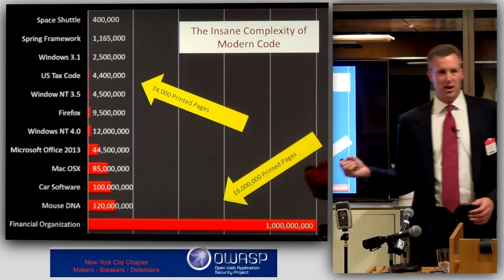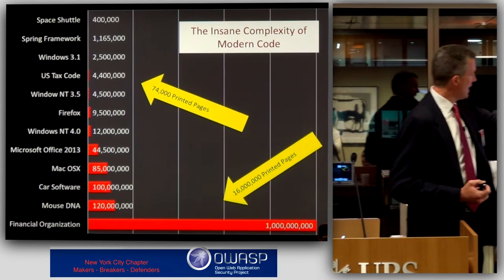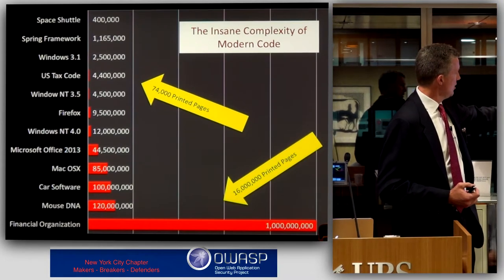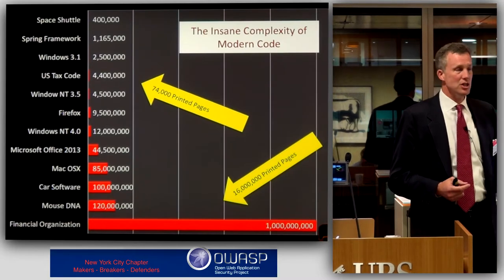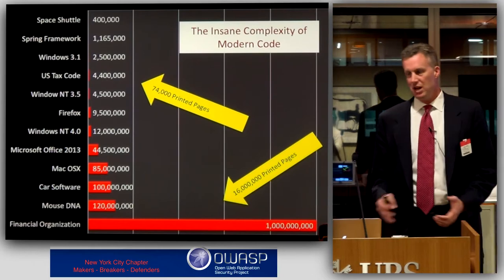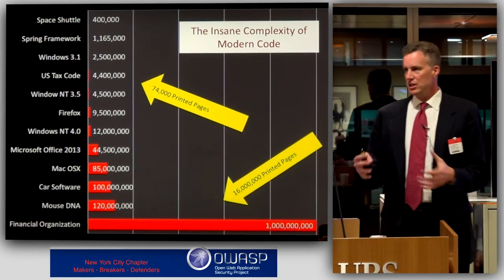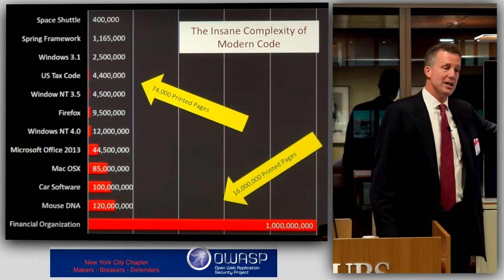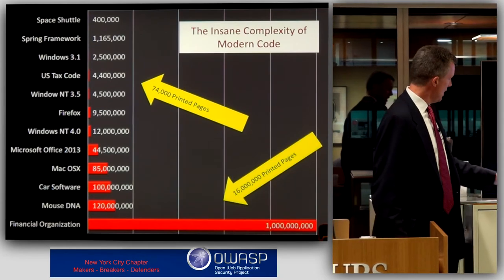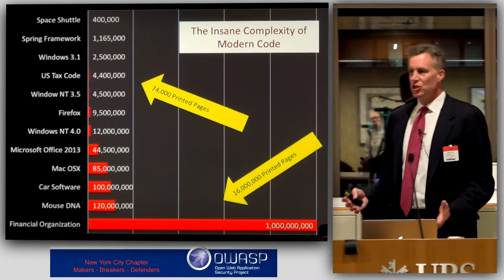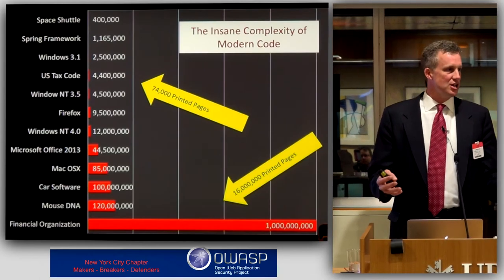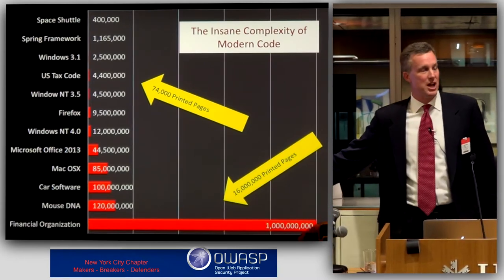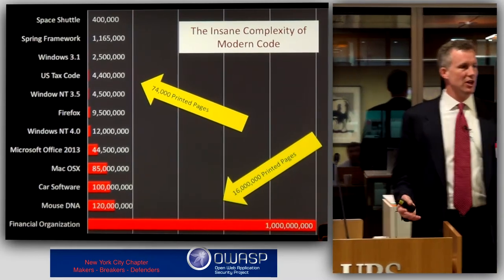I thought this would be a useful slide to talk about the difficulty of this job. When you look at complexity levels in lines of code: the Space Shuttle is 400,000 lines of code; Spring Framework is 1.1 million; the U.S. Tax Code is 4.4 million lines of code. A typical enterprise application today could easily have 10 million lines of code if you include the libraries — a few hundred thousand lines of custom code and then several million lines of libraries. A typical car has 100 million lines of code; mouse DNA, 120 million. A mid-sized financial organization with 1,000 applications, each with a million lines including libraries, has a billion lines of code to secure.